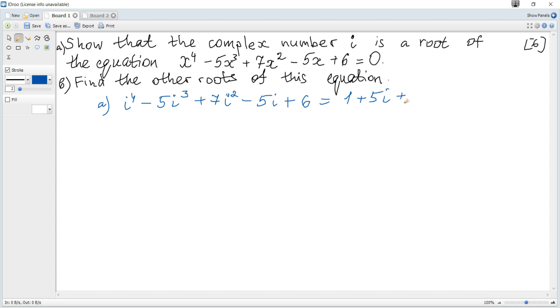It's actually -7 because i² is -1, minus 5i plus 6, and we can see that it's 0 as required.